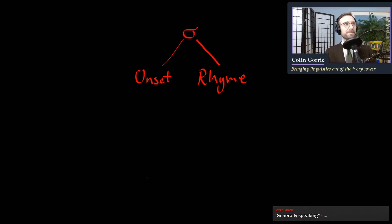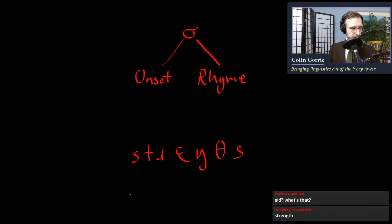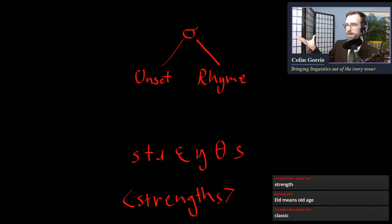And the rhyme consists of that peak of sonority, as well as all of the consonants that follow it. So let's think of a more involved English word. Let's think of a syllable that's like strengths. Strengths. This is the English word spelled like this. Strengths.